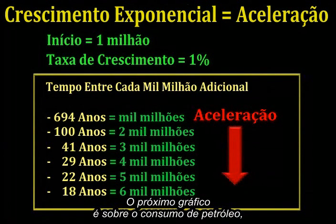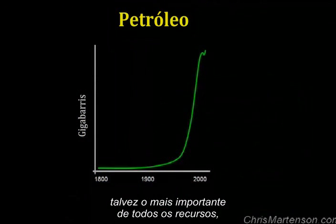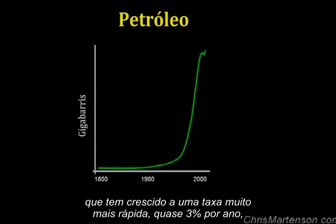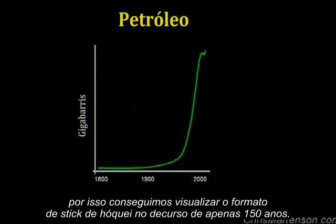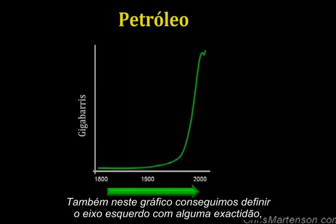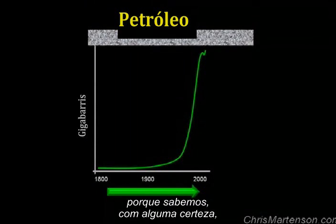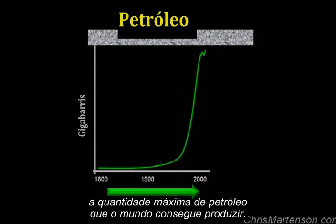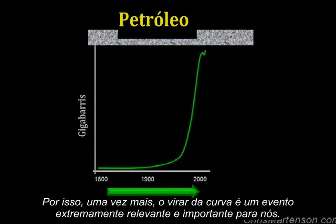This next chart is of oil consumption, perhaps the most important resource of them all, which has been growing at the much faster rate of nearly 3% per year, so we can detect a hockey stick shape over the course of just 150 years. And here too, we can fix the left axis with some precision, because we know with reasonable accuracy how much oil the world can maximally produce. So having turned the corner is an extremely relevant and important event to us.